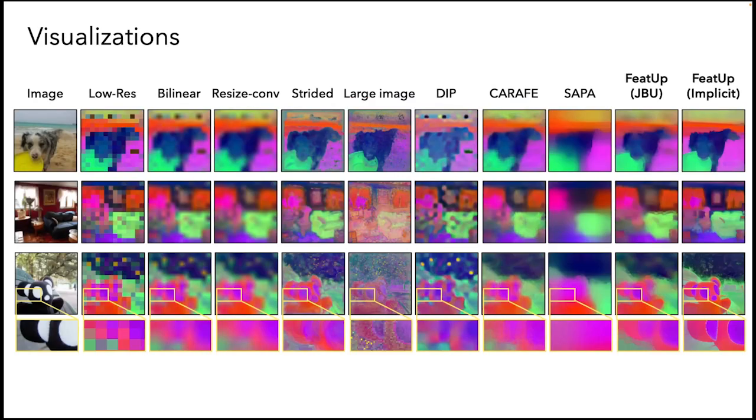Here are some visualizations of vision transformer features upsampled by a factor of 16 through various methods. We can see that all methods preserve the low frequency semantics present in the original features, but only FEEDUP incorporates high frequency edges and fine details from the input image to produce more pixel accurate features.